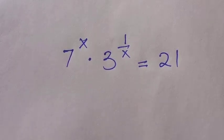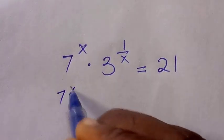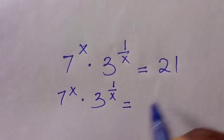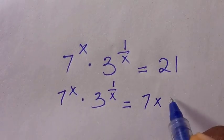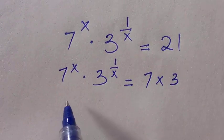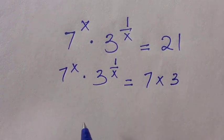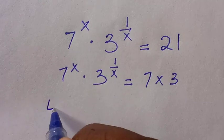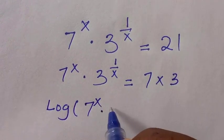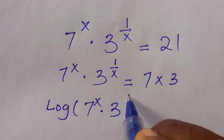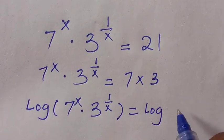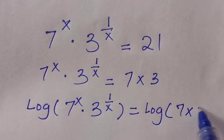Let's get into it. So here we have 7 to the power x multiplied by 3 to the power of 1 over x equals 7 multiplied by 3. Next, we are going to introduce logarithm to both sides, giving us log of 7 to the power x times 3 to the power of 1 over x equals the logarithm of 7 multiplied by 3.